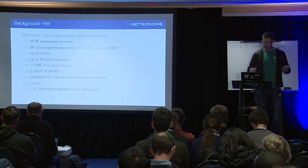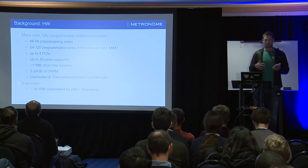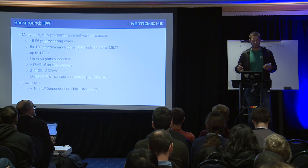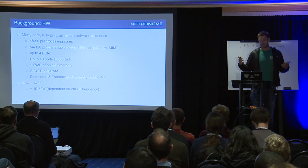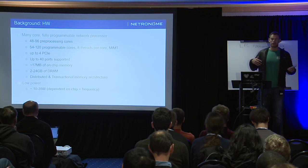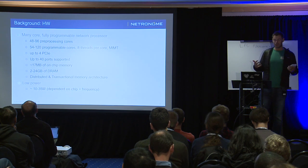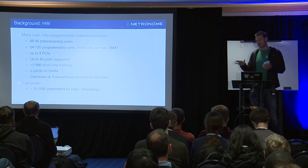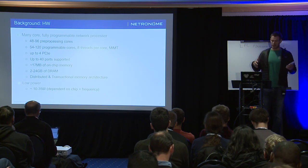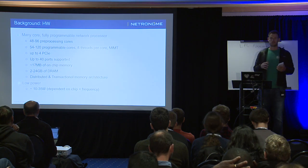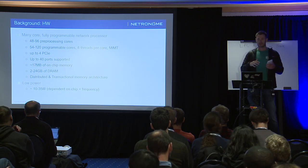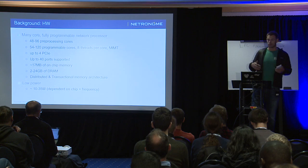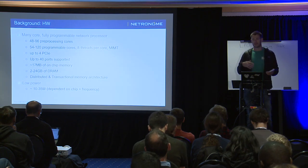Just to give a quick overview of the hardware: we have a many-core fully programmable network processor which sits on a NIC. You've got up to hundreds of programmable cores, eight threads per core, up to four PCIe's, and bizarrely up to 40 ports supported on one of the chips — which is relevant for something I'll talk about later. It's basically a large mesh of small processing elements in a many-core architecture. We're also pretty low power: 10 to 35 watts depending on the chip and frequency.